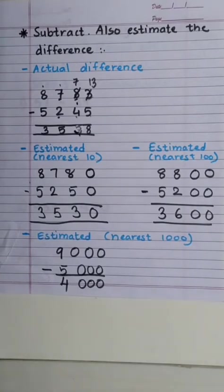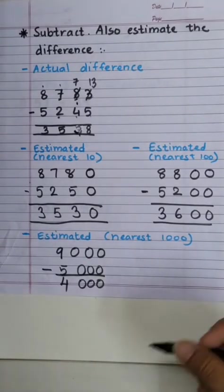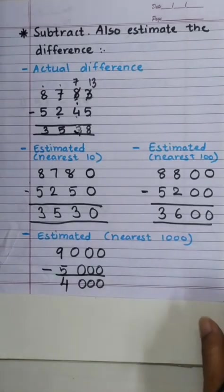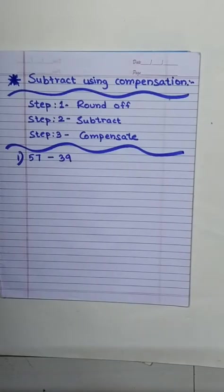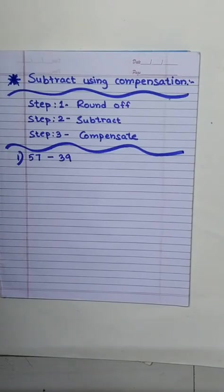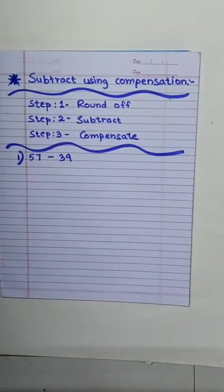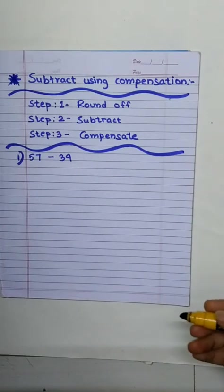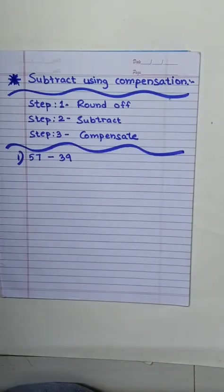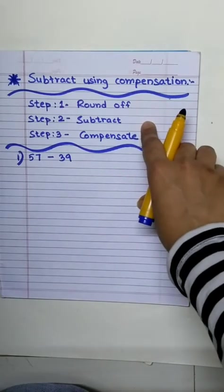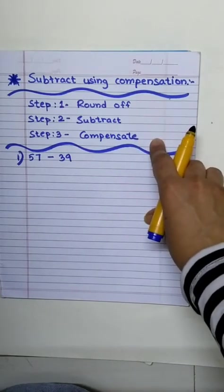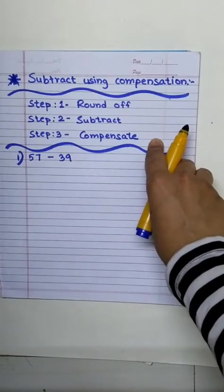So, when we do not need the actual difference, we will go with estimation. Because it makes the calculation easy. Right? Now, we are going to learn about one more easy technique of subtraction, which is called compensation. Yesterday, we learned compensation method for addition. In the same way, we are going to learn for subtraction. For easy calculations, we first round off our number. Then we subtract. And in the last, we compensate. Let's try with one example.